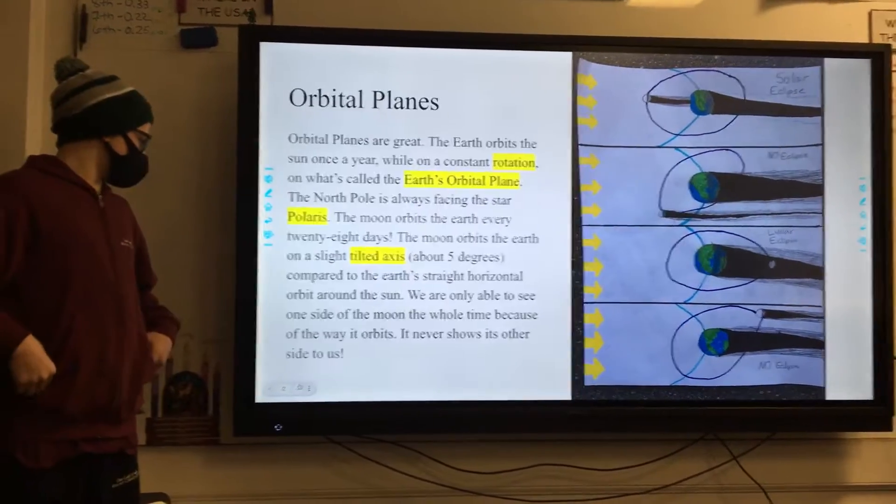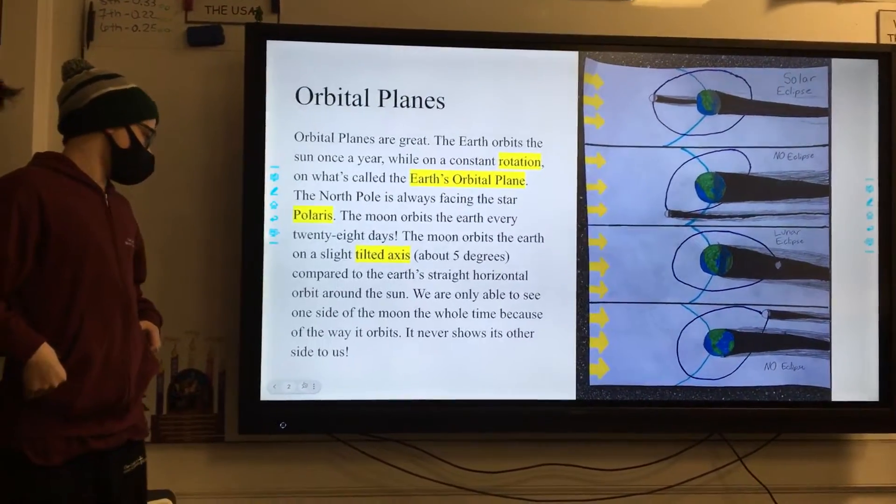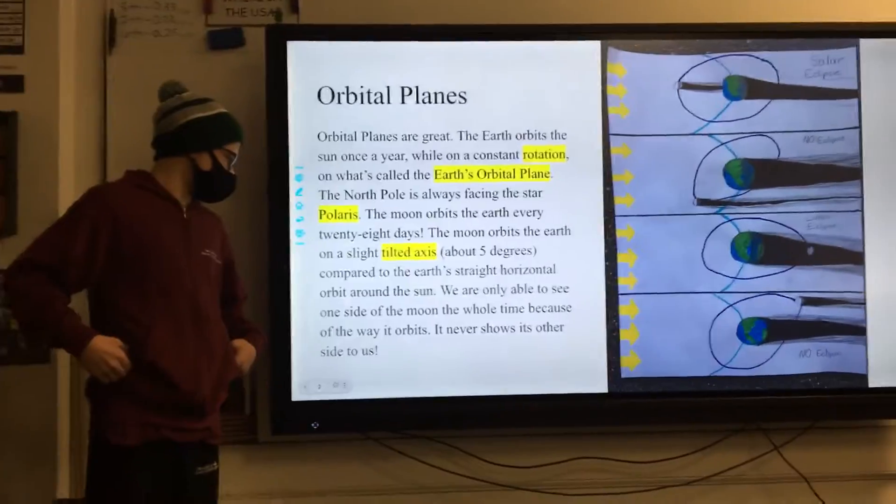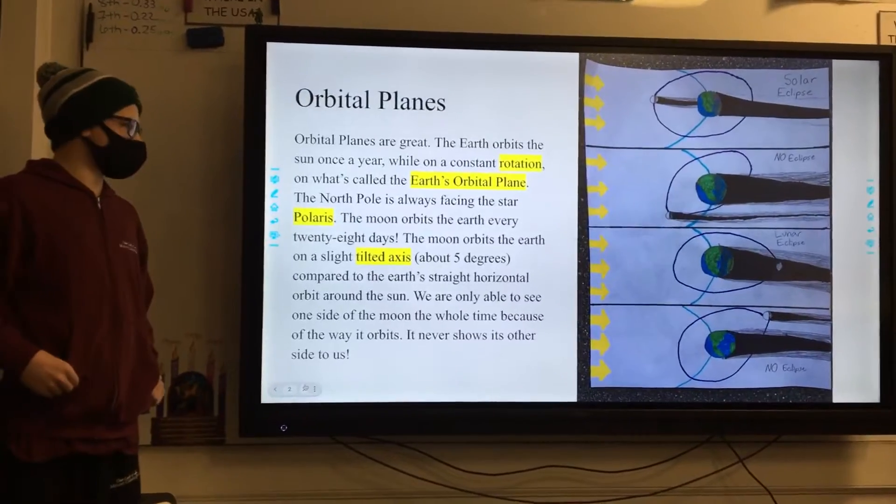We are only able to see one side of the Moon the whole time because of the way it orbits. It never shows its other side to us.